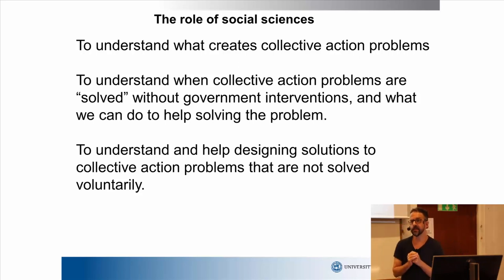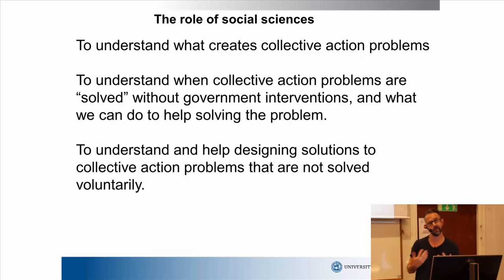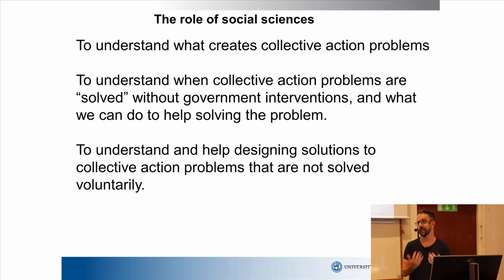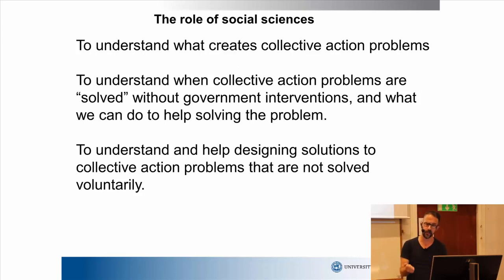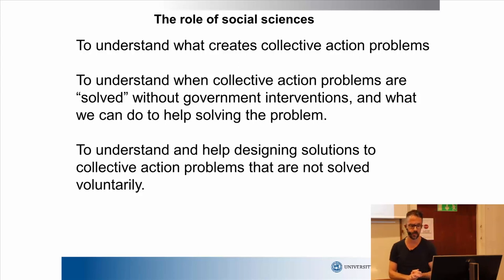I'm a social scientist — I'm not here to talk about how to develop new drugs. I'm here to talk about this as a social science problem. Social sciences have a number of things to offer when trying to handle this problem. First and foremost, it's about better understanding why people are doing what they're doing. Given that we know that, how can we affect people to, for example, take less antibiotics or prescribe less antibiotics? In particular, I think we have a lot to say about how to handle these collective action problems from a political point of view — what general rules, guidelines, and even taxes we can implement.